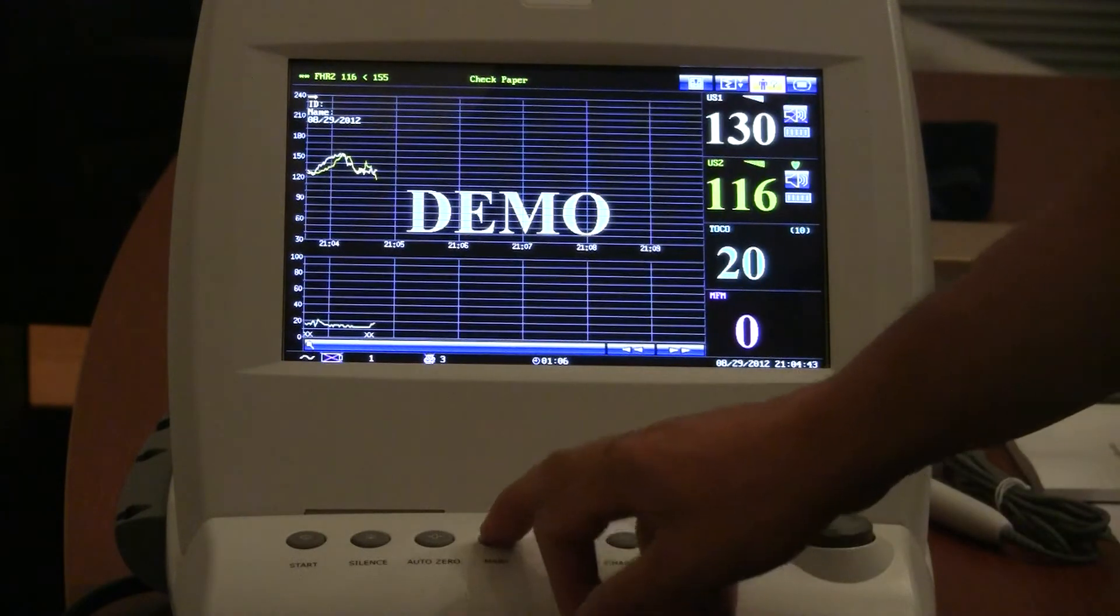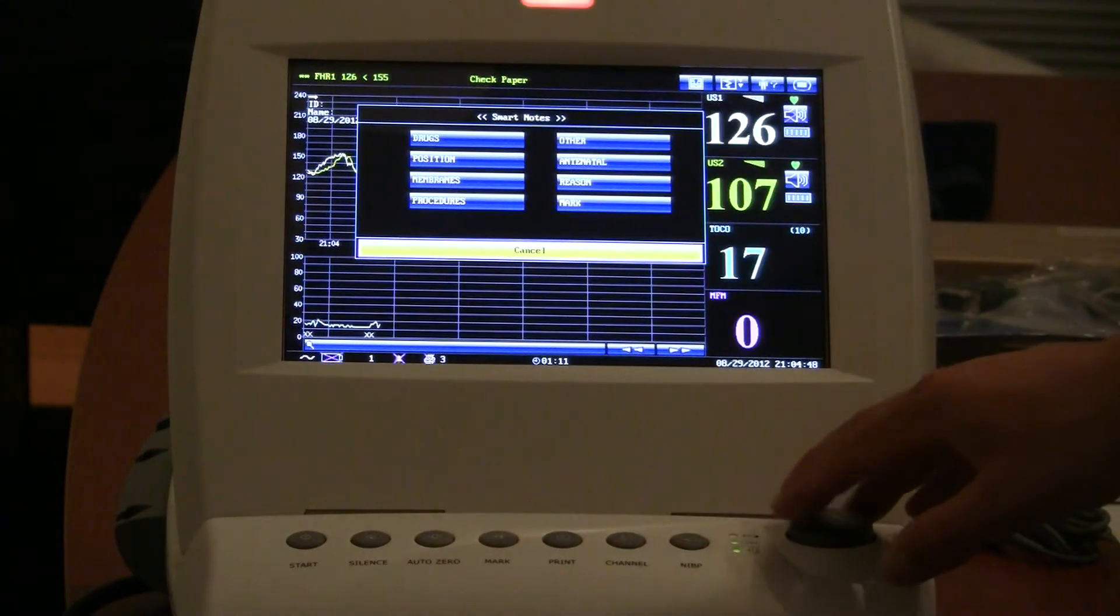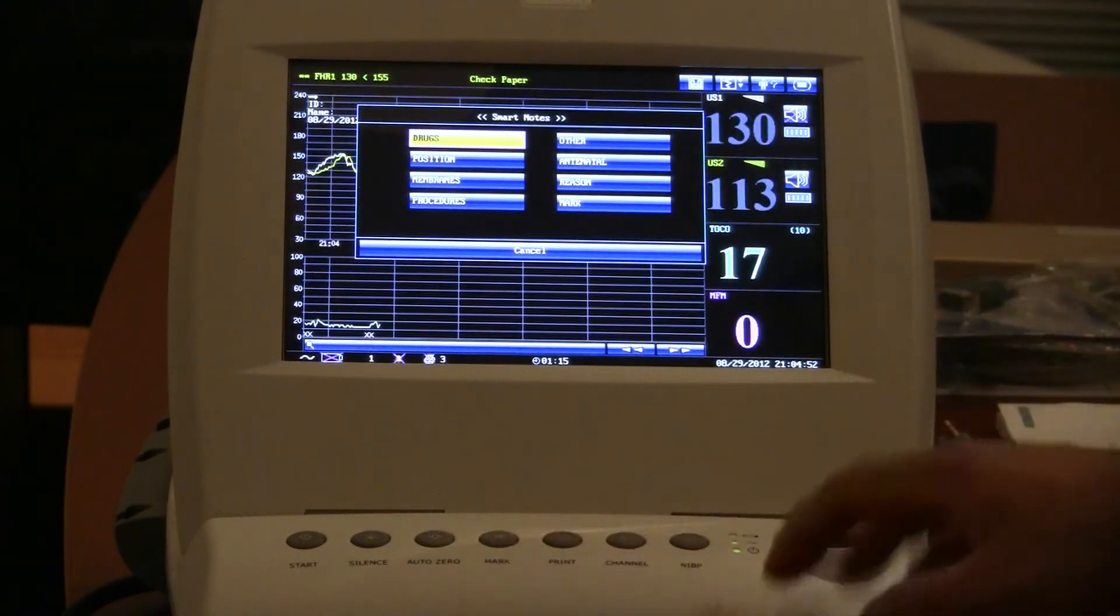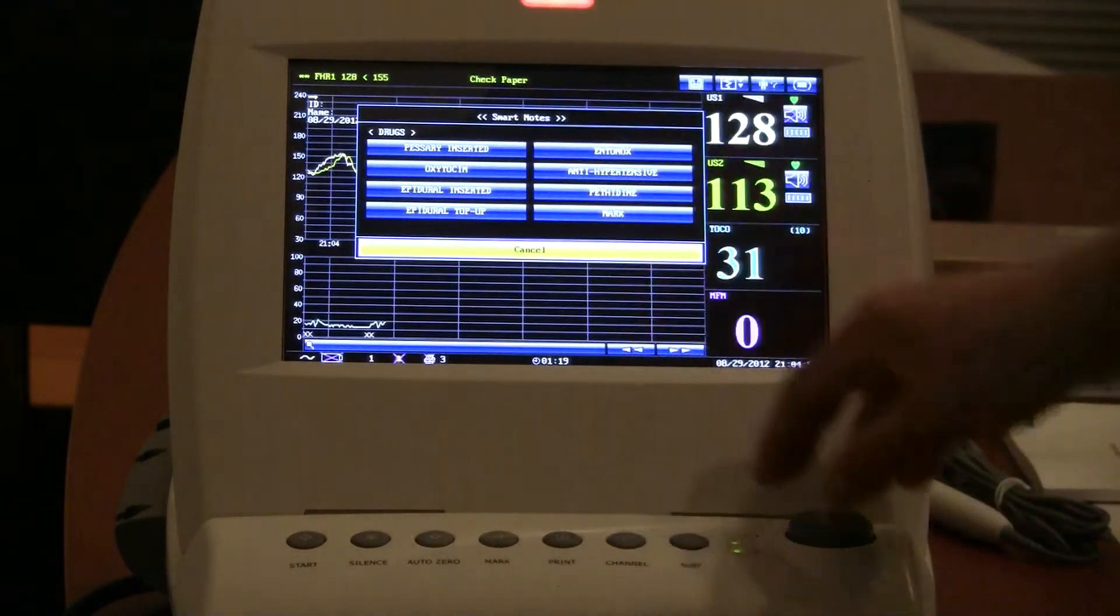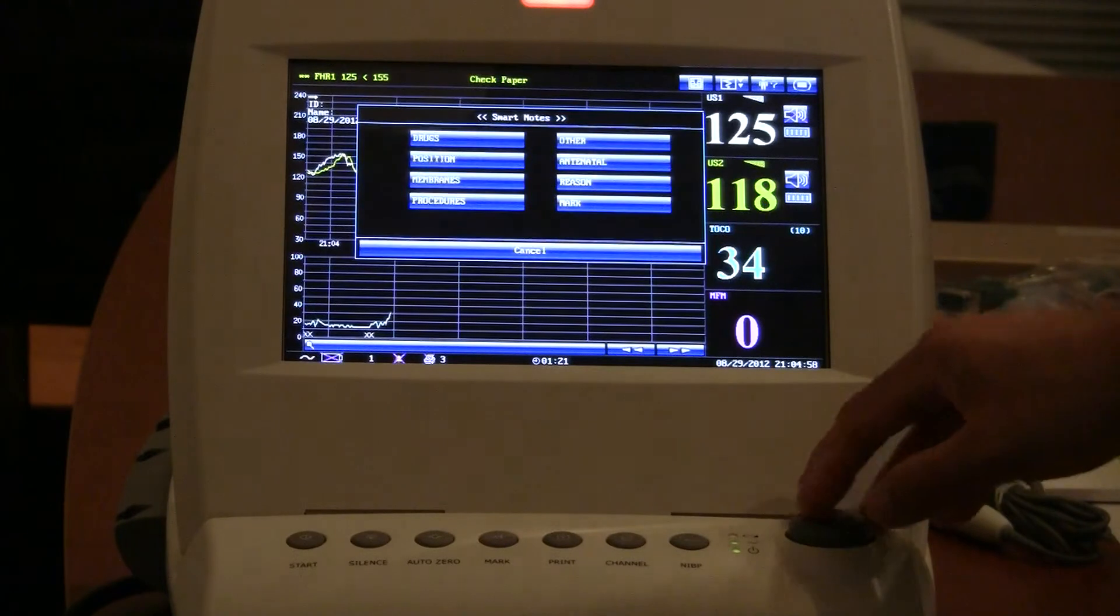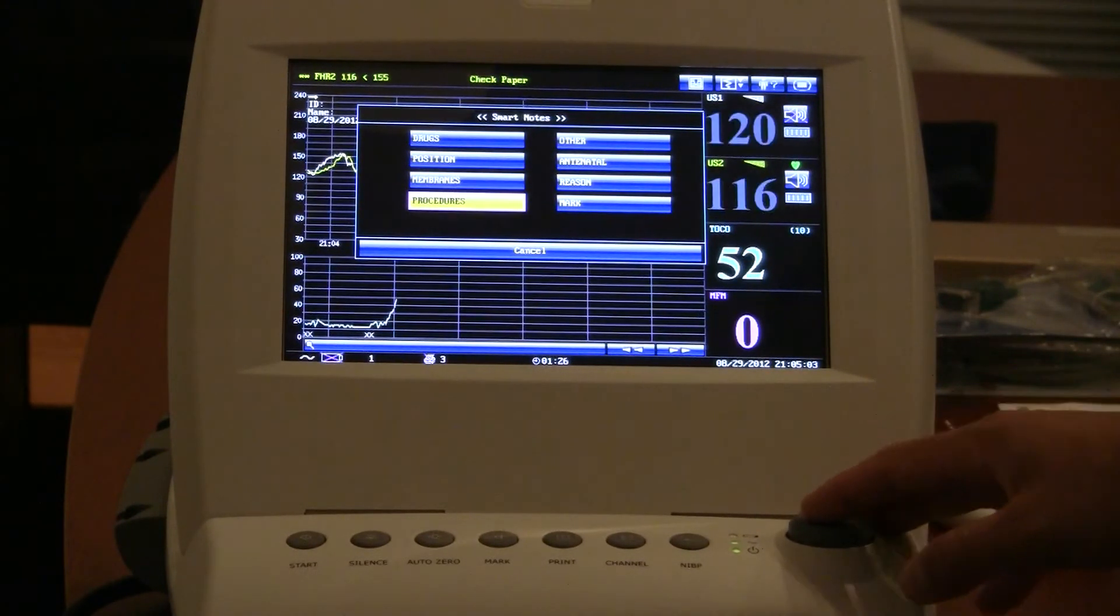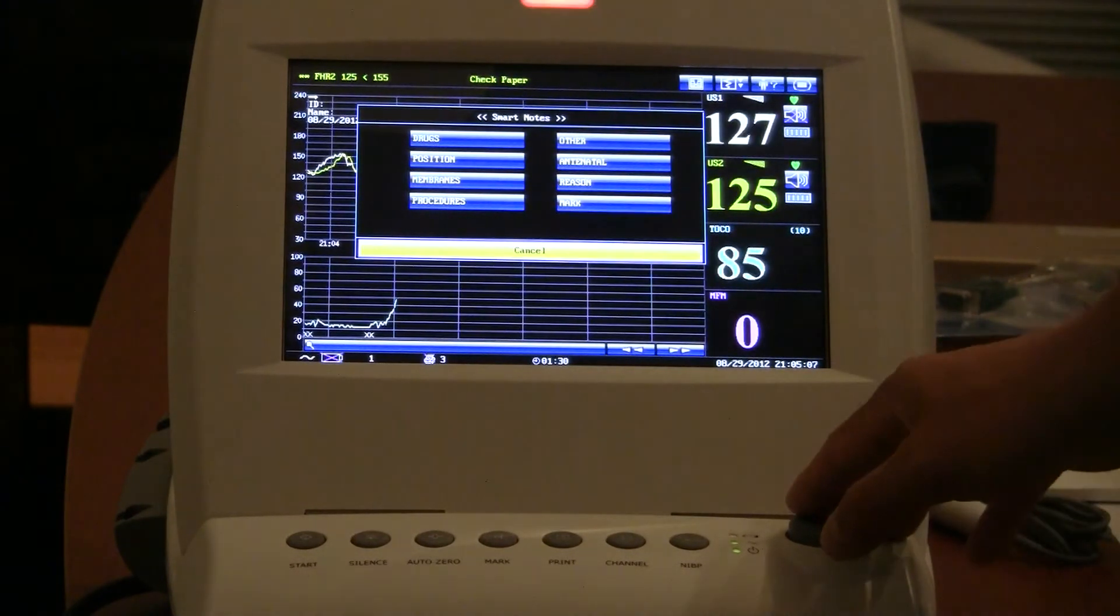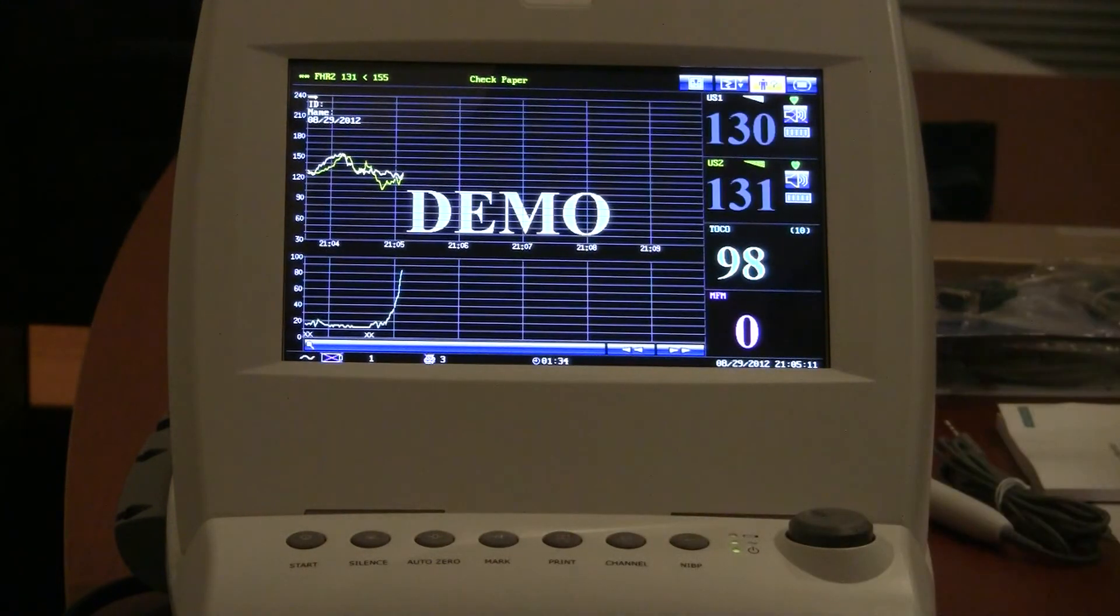You've got a mark button here, so if you wanted to, if you recall, we left smart notes on. So if we have some certain event that we want to mark, you hit that button. You can enter drugs that maybe have been administered, and it's got some drop-downs here, or maybe the position, you move mom around a little bit, membranes, procedures, other. There's a couple different ones here: reason, mark. So you can use that button right there to actually note in the system some sort of event that took place.